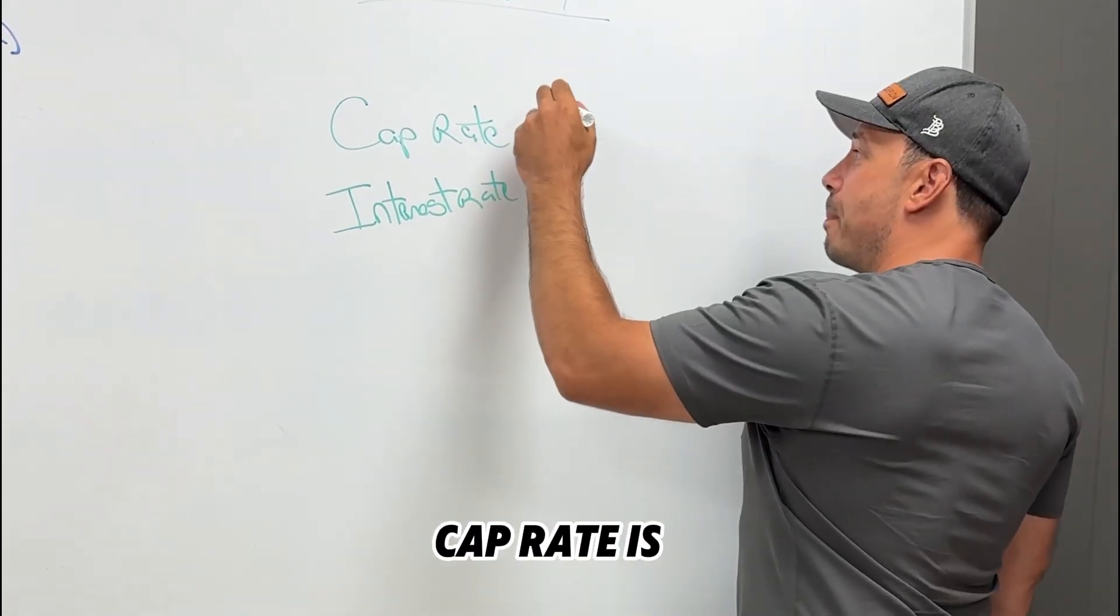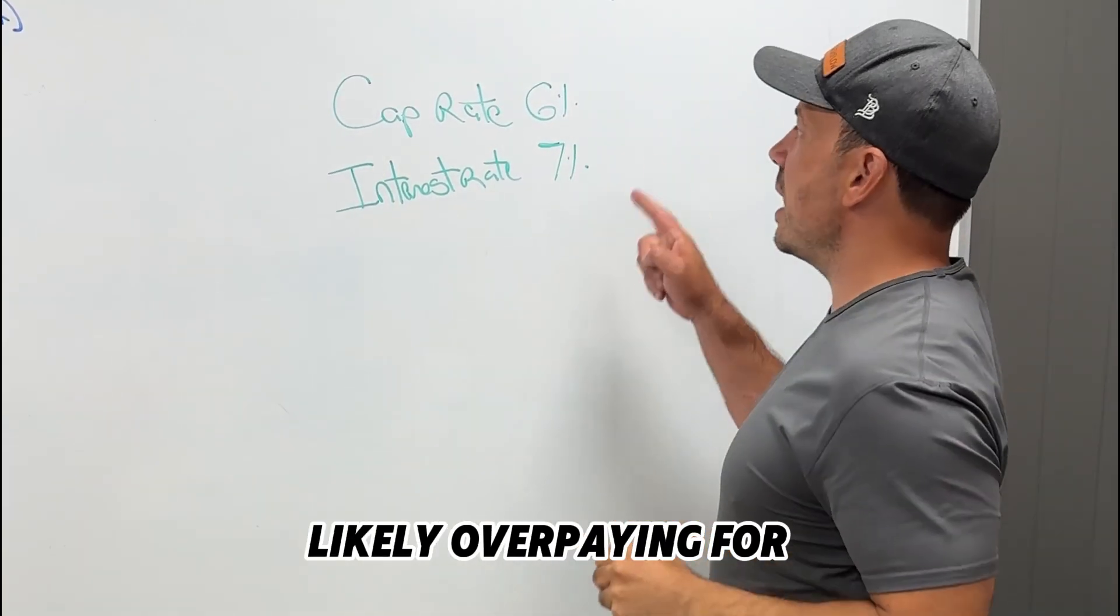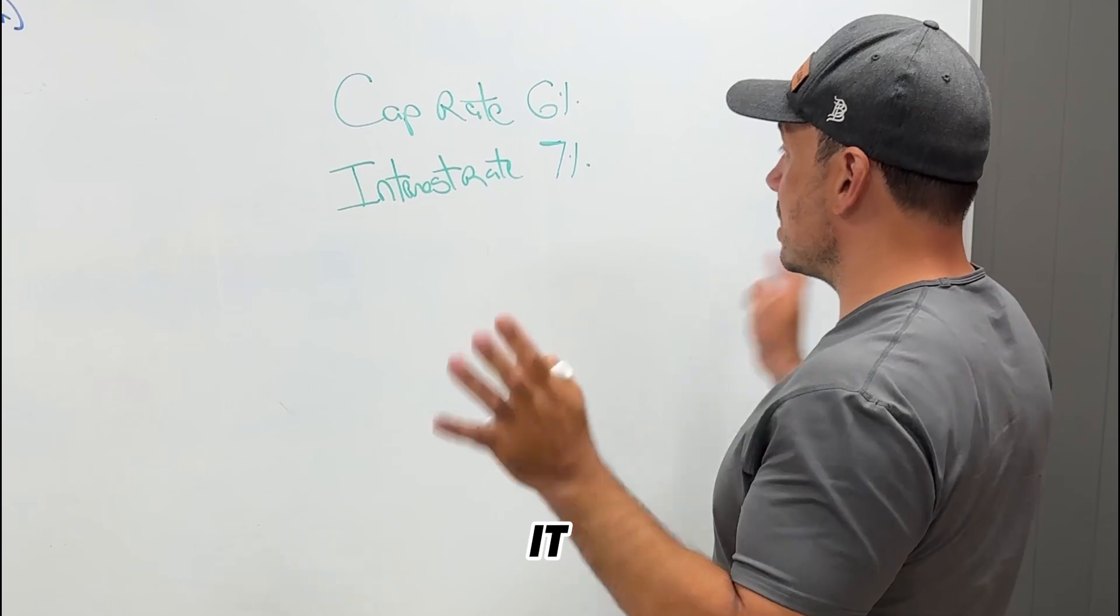So if your cap rate is 6% and you're borrowing money at 7%, you are most likely overpaying for that deal. That's simple.